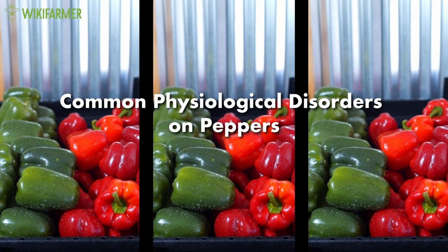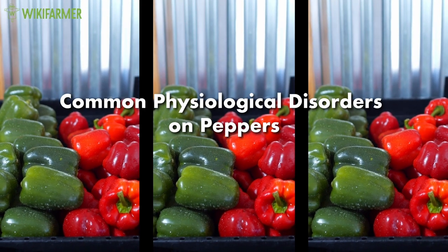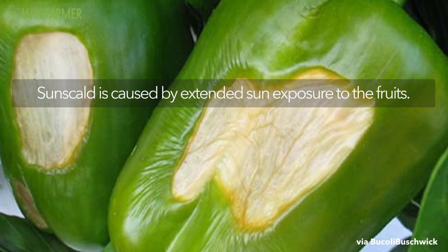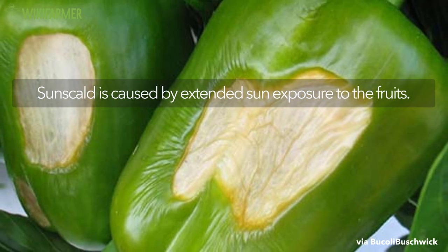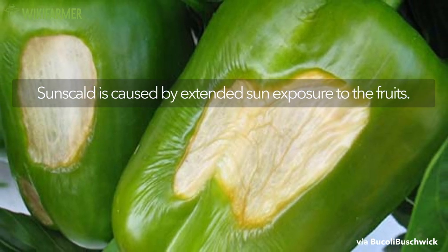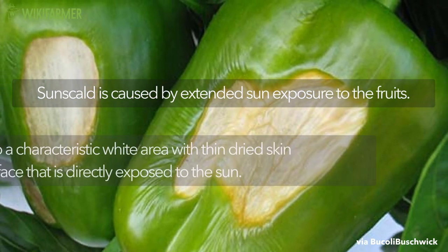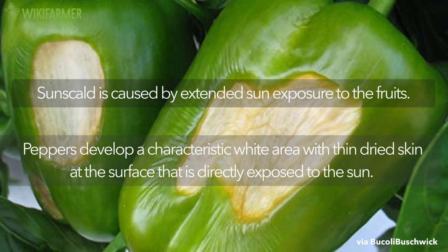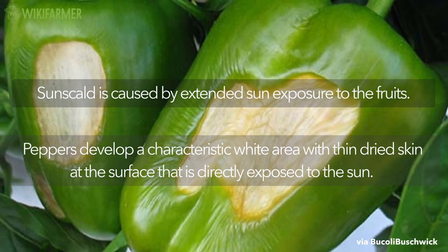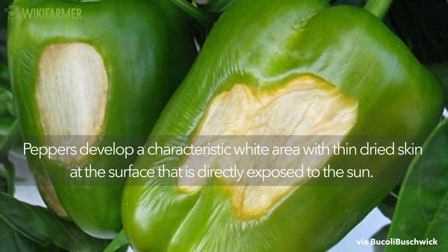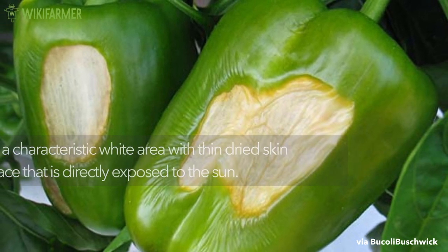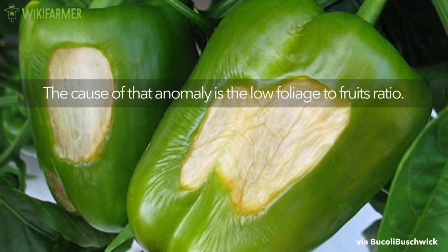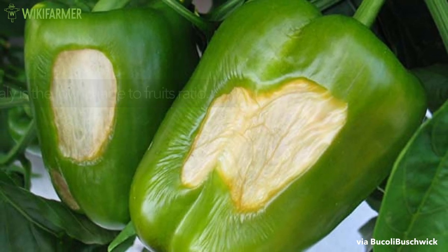Common Physiological Disorders on Peppers. Sunscald is caused by extended sun exposure to the fruits. Peppers develop a characteristic white area with thin, dried skin at the surface that is directly exposed to the sun. The cause of that anomaly is the low foliage to fruits ratio.